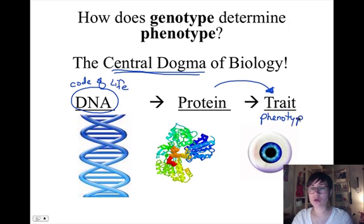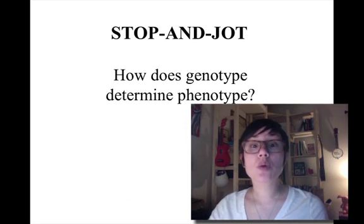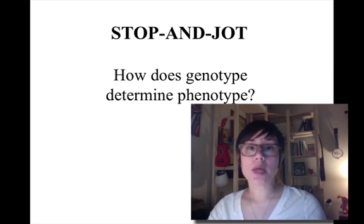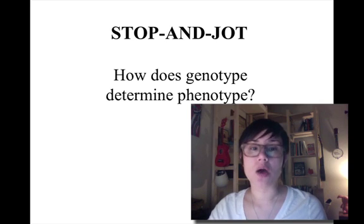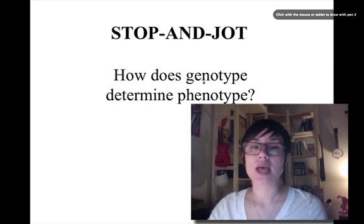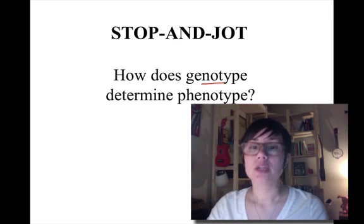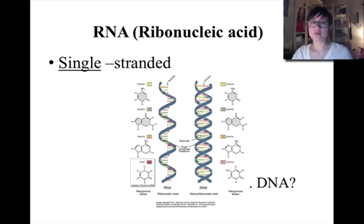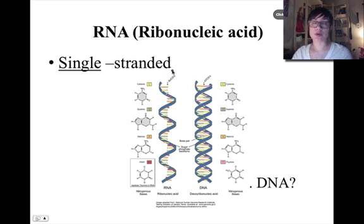Another term we can use for trait is the word phenotype, so on your notes make sure you know that these two terms can be used interchangeably. Now let's talk about some key helpers that allow us to go from DNA to proteins. We've talked about RNA before but haven't spent much time on it — we've only discussed it in passing.